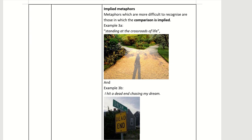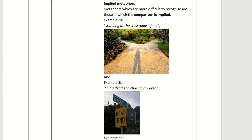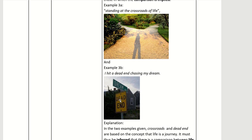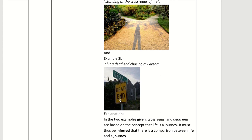Now, implied metaphors. Implied metaphors are more difficult to recognize compared to those which are clearly stated. For example, 'standing at the crossroads of life' — you can see that this person is standing at a crossroads, choosing which path to take; he is making a decision. Another example: 'I hit the dead end chasing my dream' — hitting the dead end means there is nowhere to go.